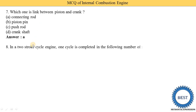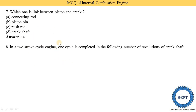Next MCQ: in a two-stroke cycle engine, one cycle is completed in how many revolutions of the crankshaft? One stroke equals 180 degrees of crank rotation, and two strokes equal 360 degrees, which is one complete revolution. Options are: two, three, one, or four. The correct answer is option C — one revolution.